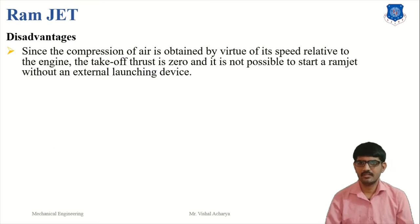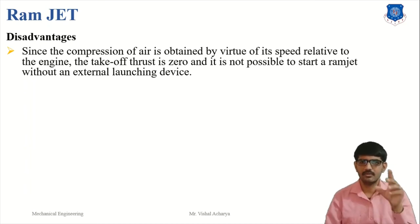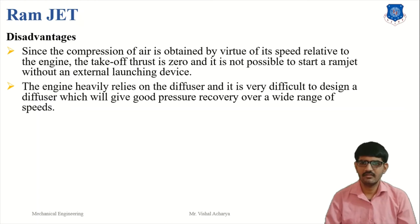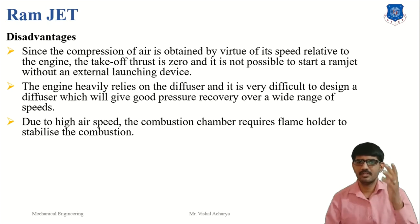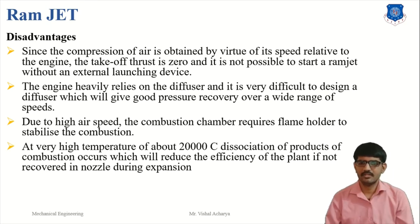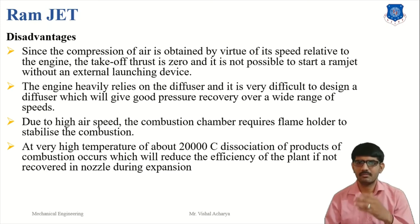The disadvantages of the ramjet: since compression of air is obtained by the ram effect of the speed of the engine, take-off thrust is zero, and it is not possible to start a ramjet without an external launching device. The engine heavily relies on the diffuser, and it is very difficult to design a diffuser which gives good pressure recovery over a wide range of speeds. Due to the high air speed, the combustion chamber requires a flame holder to stabilize combustion. At a very high temperature of about 2000 degrees Celsius, dissociation of the products of combustion occurs, which will reduce the efficiency of the plant if not recovered through the nozzle during expansion.